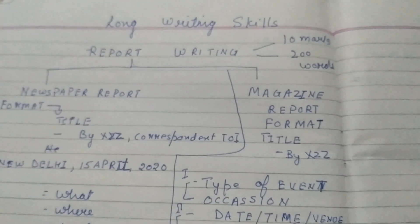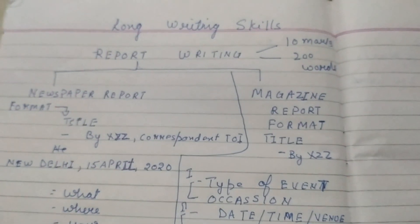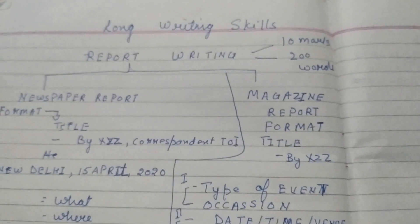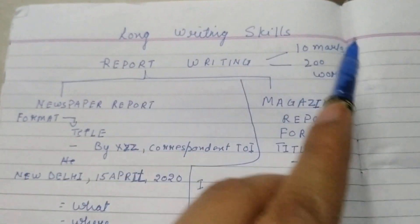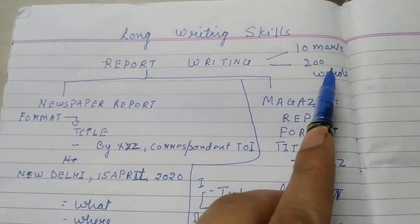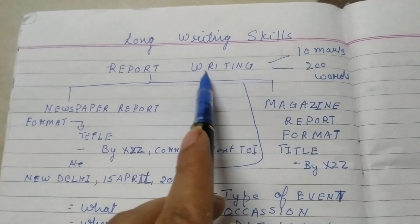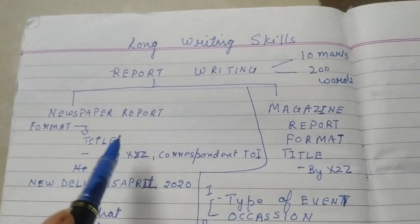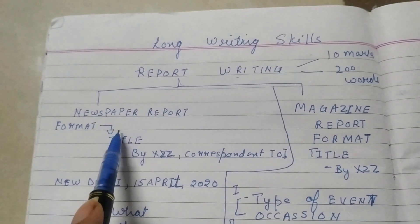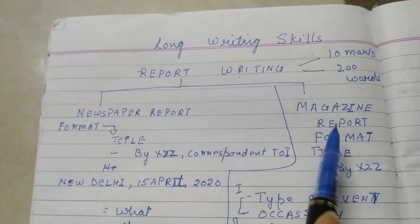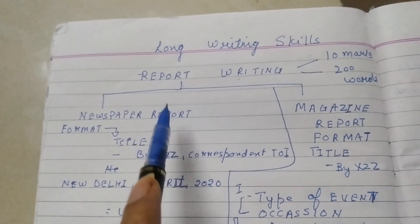In this video, I'm going to teach you about report writing. Report writing is part of long writing skills and comes for 10 marks in your paper, with a word limit of 200 words. Report writing is further classified into two parts: newspaper report and magazine report.